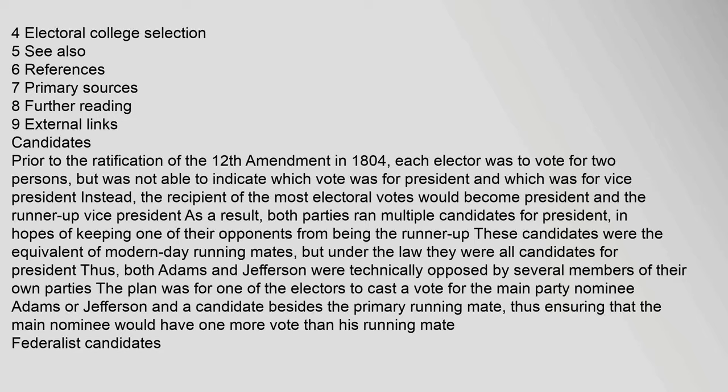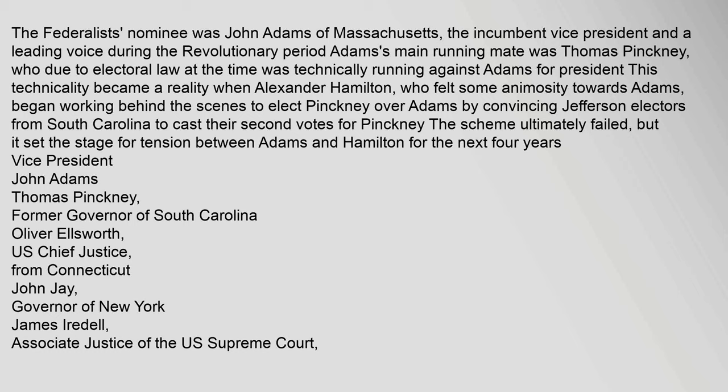The plan was for one of the electors to cast a vote for the main party nominee — Adams or Jefferson — and a candidate besides the primary running mate, thus ensuring that the main nominee would have one more vote than his running mate. The Federalists' nominee was John Adams of Massachusetts, the incumbent vice president and a leading voice during the revolutionary period. Adams's main running mate was Thomas Pinckney, who due to electoral law at the time was technically running against Adams for president. This technicality became a reality when Alexander Hamilton, who felt some animosity towards Adams, began working behind the scenes to elect Pinckney over Adams by convincing Jefferson electors from South Carolina to cast their second votes for Pinckney. The scheme ultimately failed, but it set the stage for tension between Adams and Hamilton for the next four years.